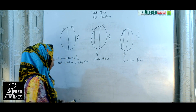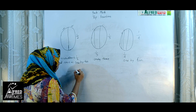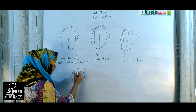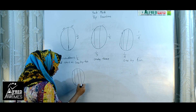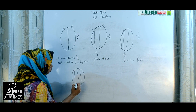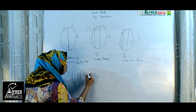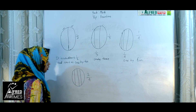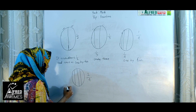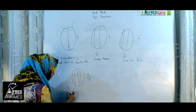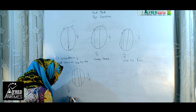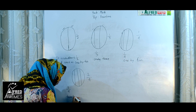Another thing: when we divide bread into 4 equal parts and I take 2 of them, it will be 2 by 4. It is read as 2 by 4 and written as 2 by 4.